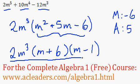At this point we're done. This is the fully factored form of 2m to the 5, 10m to the 4 minus 12m cubed. That's it.